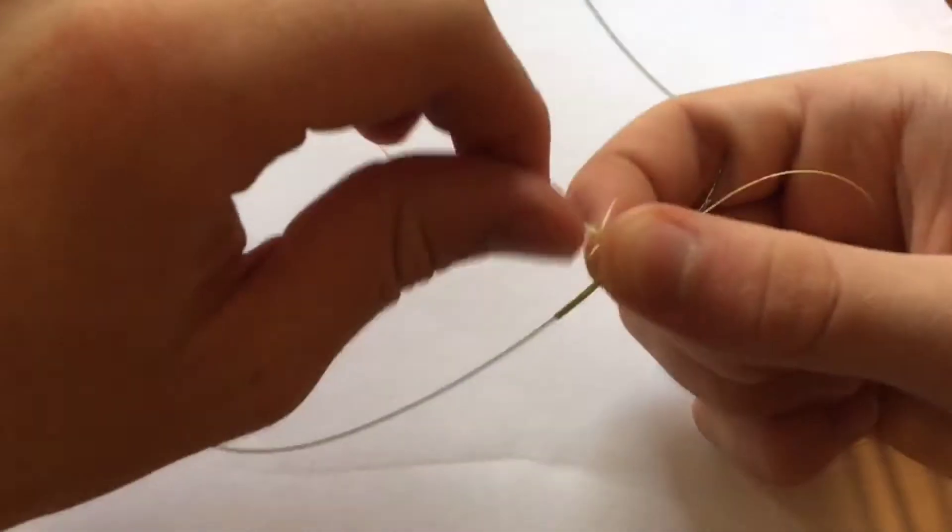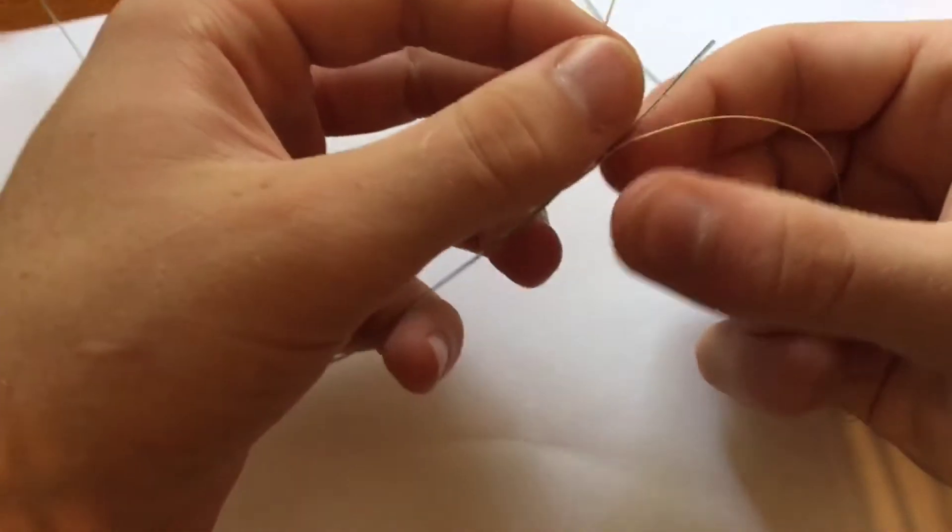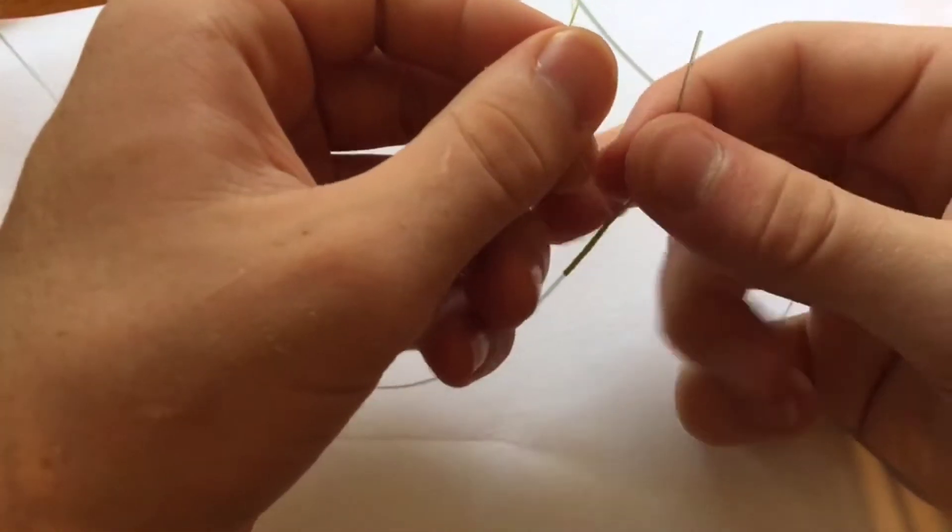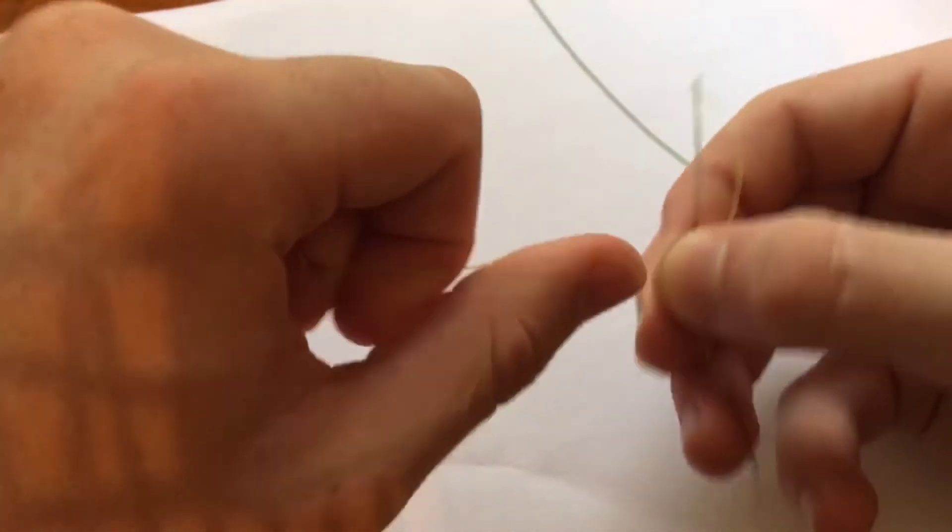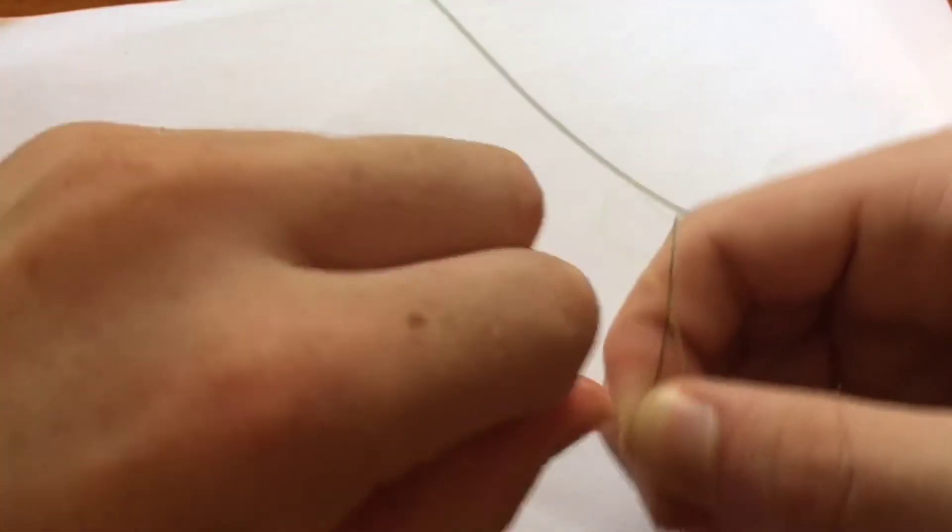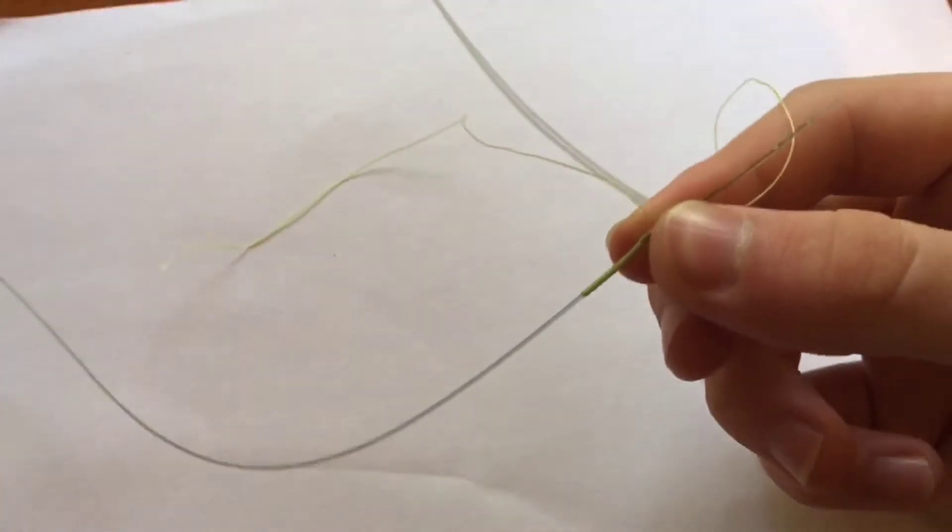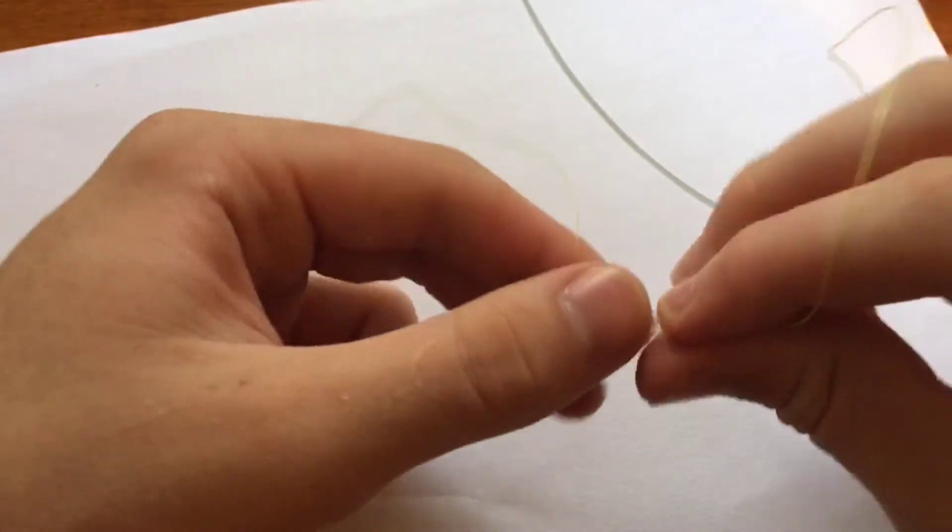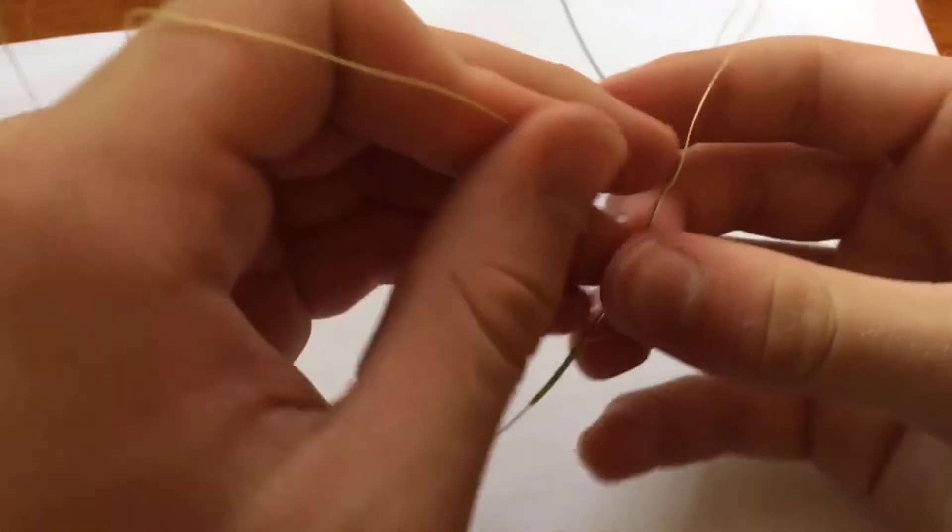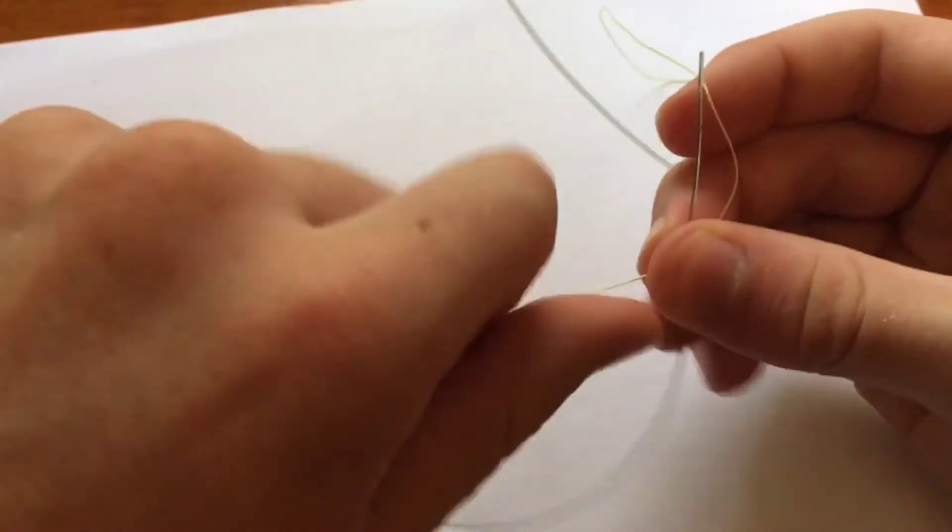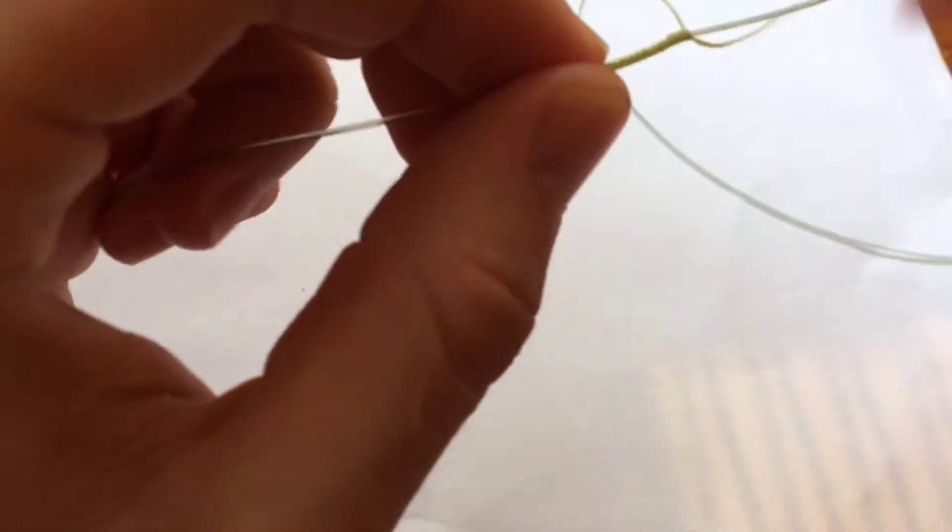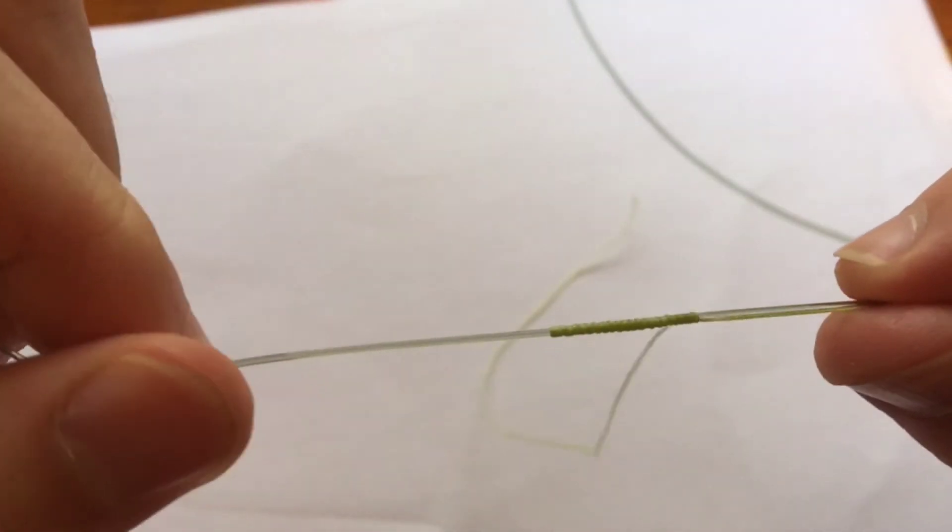You want to make sure this is nice and tight because braid does not stretch. So however tight you have this, it's going to be how tight the knot is. This knot relies on the tension. It's not like mono which will tighten up on itself, braid won't do that.